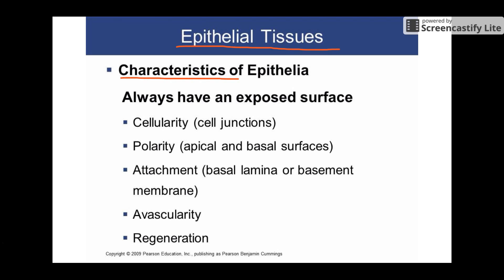So epithelia always have this exposed surface. Now this is a weird phrase for a lot of students — exposed surface does not have to mean it's on the outside of the body. Your skin, the outer covering of your hair, the outer covering of your cornea — all of those things have epithelial tissue. But you also have lots of exposed surfaces throughout your body: the lining of your digestive tract, the lining of your blood vessels, and the outside of all your internal organs are actually covered by epithelial. So you can also think of them as linings and coverings.